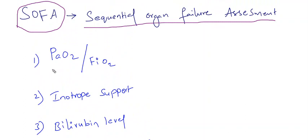Regarding the first one, respiratory system - that is partial O2 pressure to fractional inspired oxygen levels ratio, PaO2 by FiO2. With this we can assess respiratory function. If PaO2 by FiO2 is more than 400, it is normal and 0 points will be given.